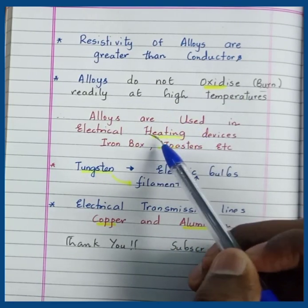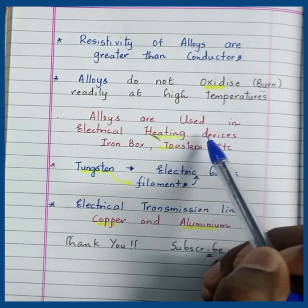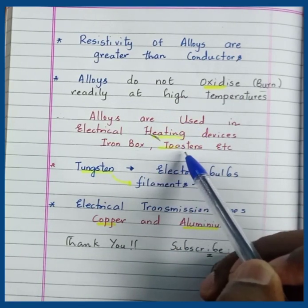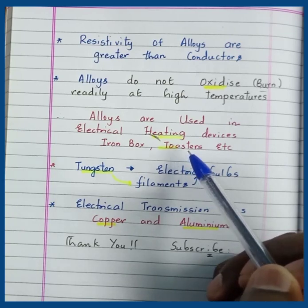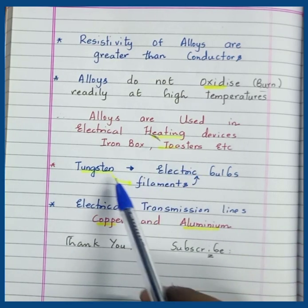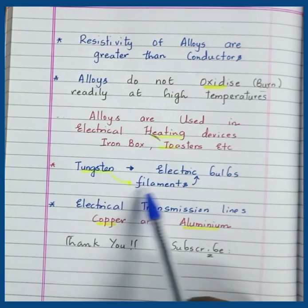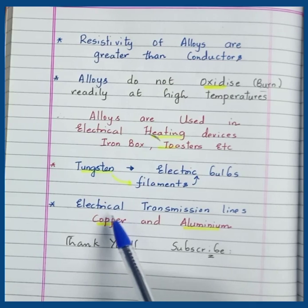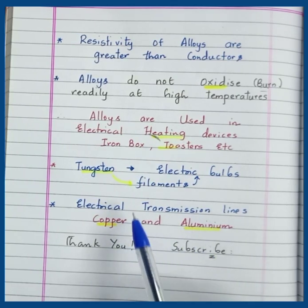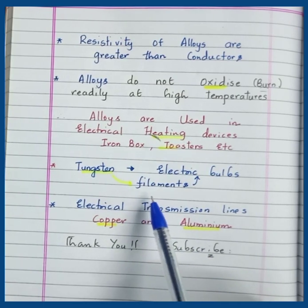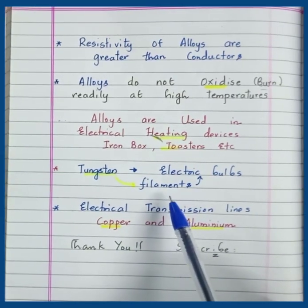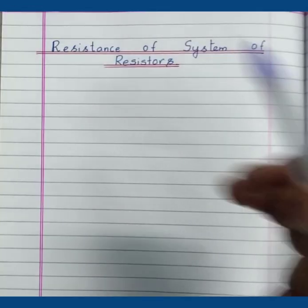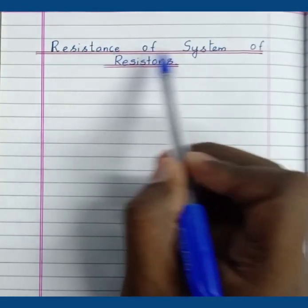We also learned why alloys are used in electrical heating devices such as iron boxes and electrical toasters, why tungsten is widely used in filaments of electric bulbs, and the use of copper and aluminium in electrical transmission lines.